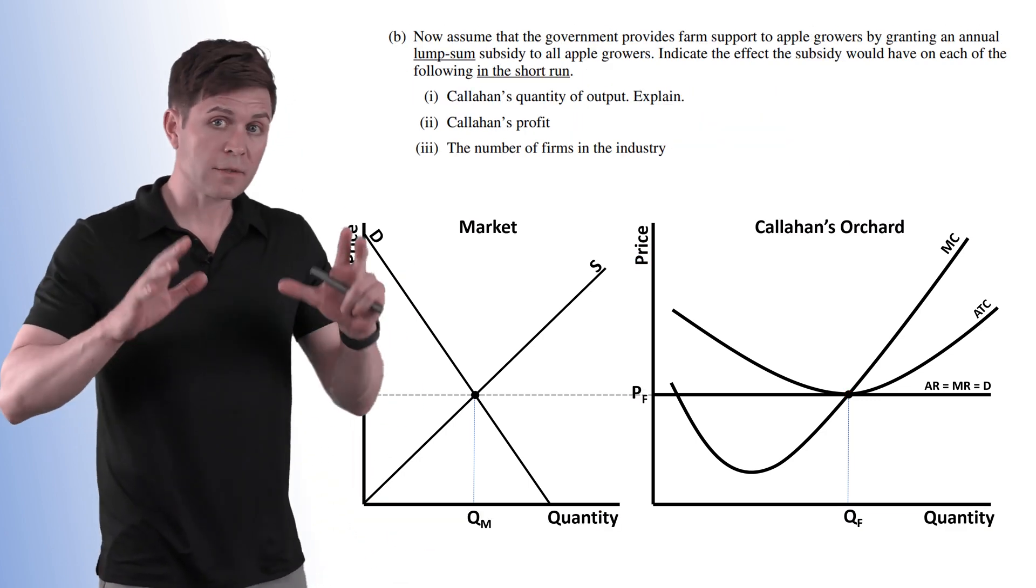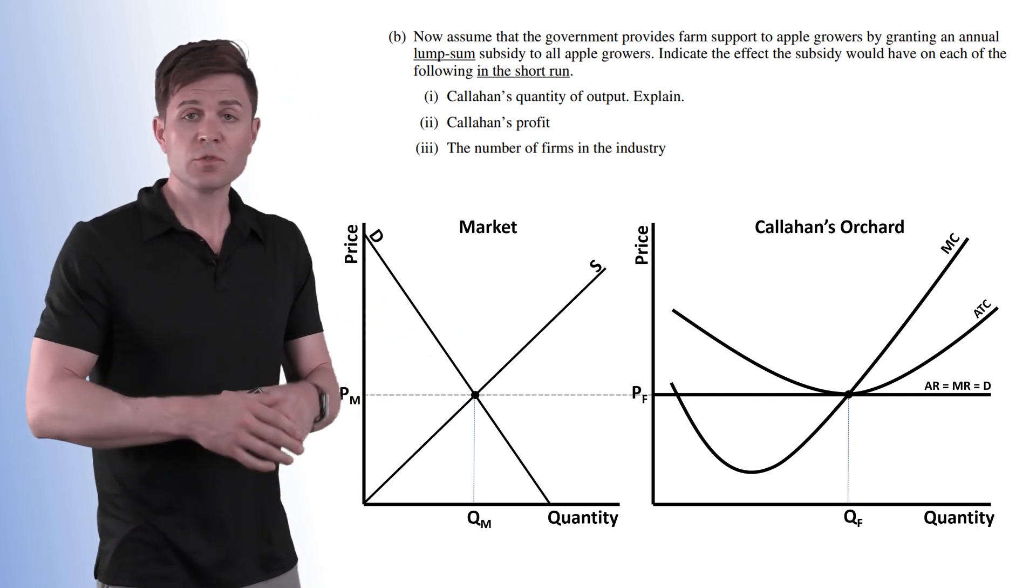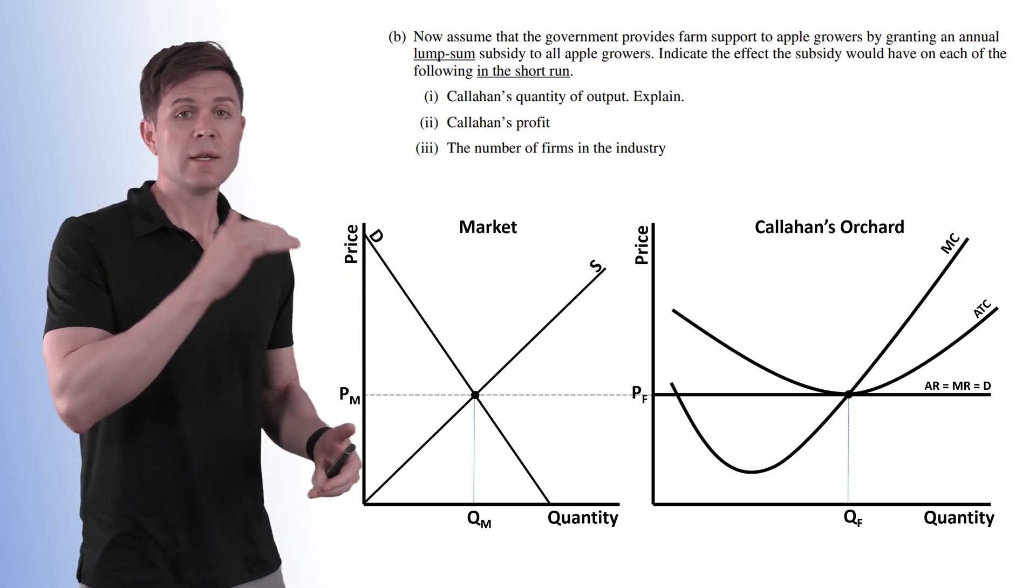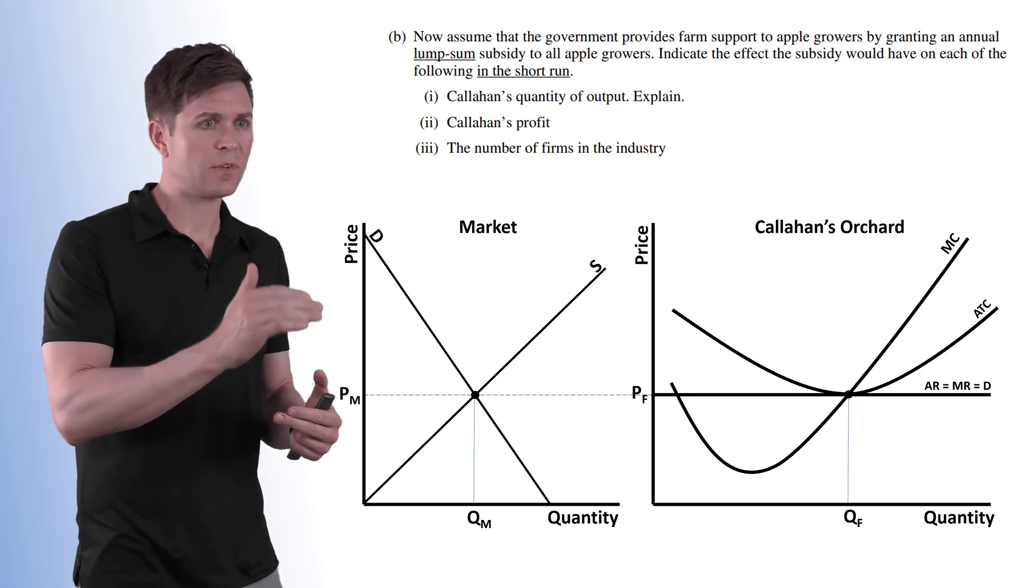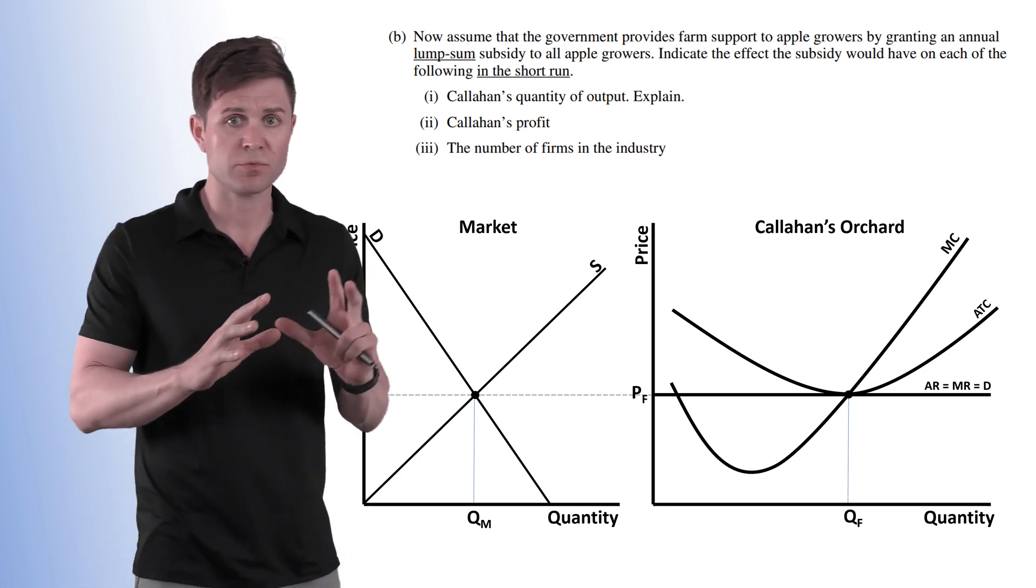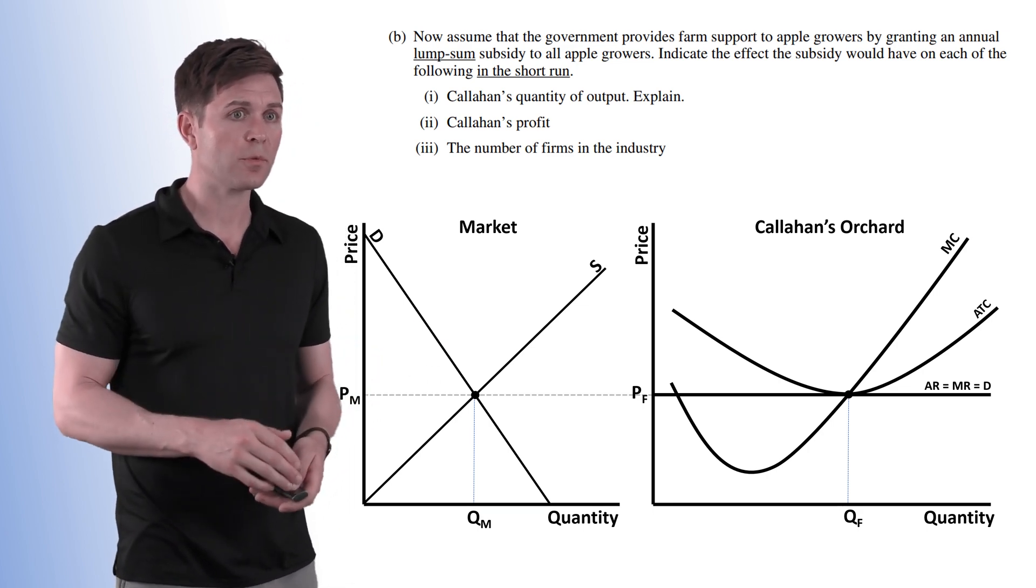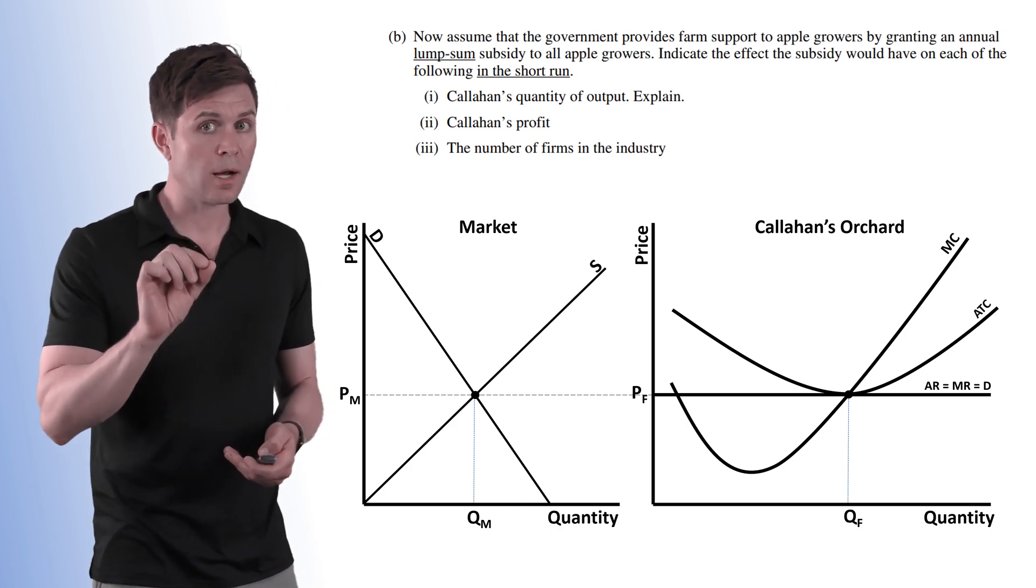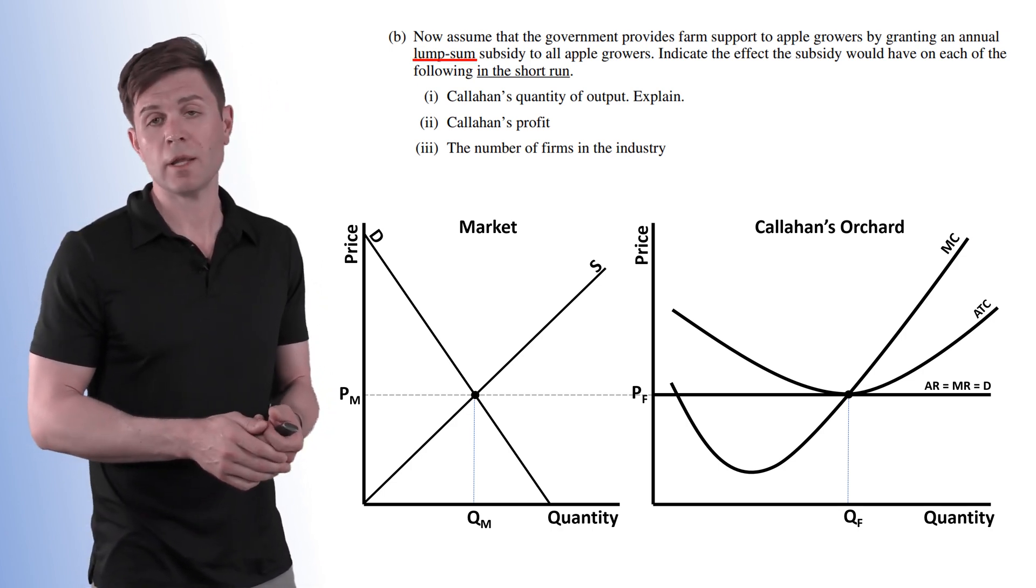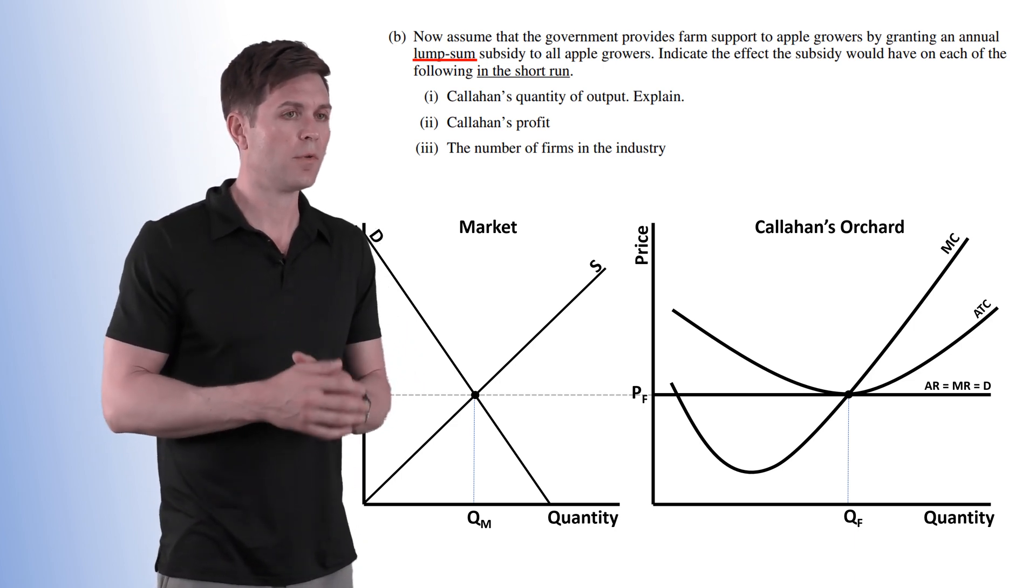Now Part B, like these questions so often do, add some sort of tax or subsidy into this situation. So we've got our side-by-side models here. Now for Part B you don't necessarily need to illustrate any of this but I got the models there just to explain it a little bit better. So now assume that the government provides farm support to apple growers by granting an annual lump sum subsidy to all apple growers. So it's important it's lump sum versus per unit. Very important.